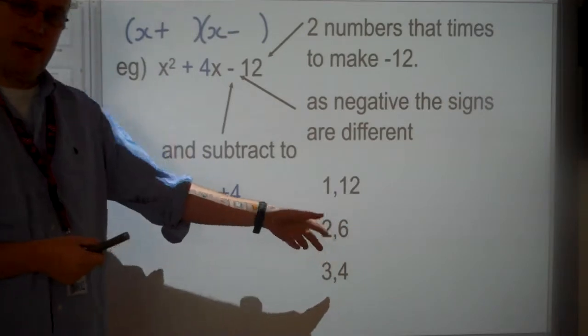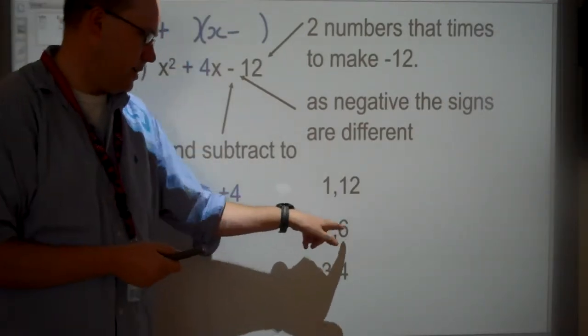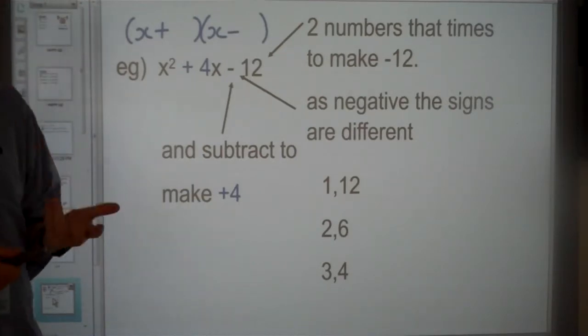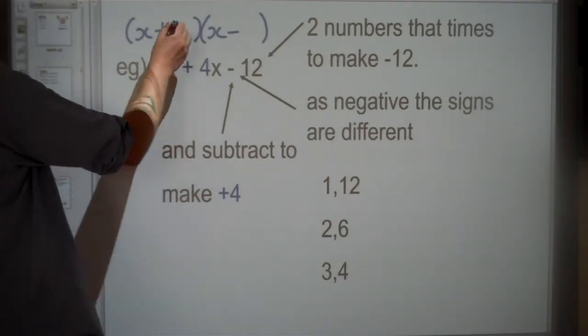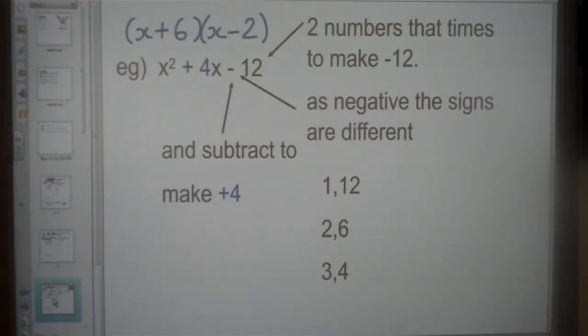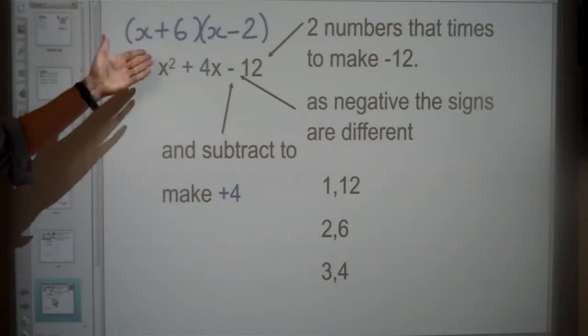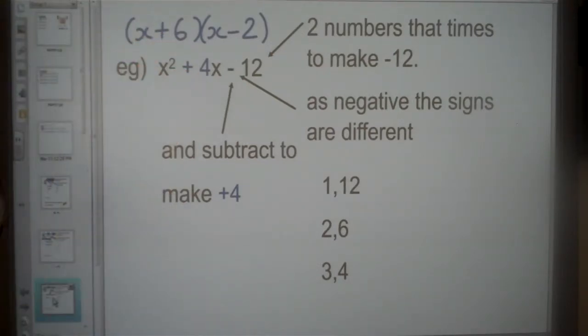This time I'm going to subtract to make positive 4. If I do 2 take away 6, I get -4, so you might want to focus on the 4 part first. I'm going to think which way round do I want to subtract. I'd like to do 6 take away 2 to give me 4. If I switch the numbers around, 2 take away 6 gives me -4. If this had said x² - 4x, then that would have been the correct answer for that one.